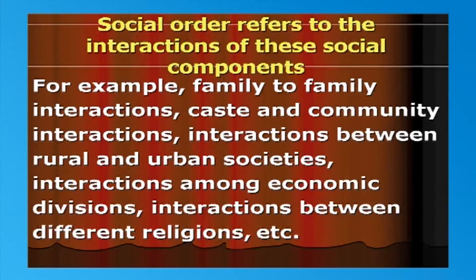Now, let us look into the social structure and social order. It is necessary to understand the social structure and the social order before proceeding to an analysis of the sociological background of crime. Social structure refers to the various components of a society. Any society at any time has its own structure and order. The components of social structure are: family and family system (joint families or single families), caste, communities and rural-urban societies, economic system, administration, religion, customs and conventions, institutions like marriage, family festivals and rituals, police system, and educational institutions.